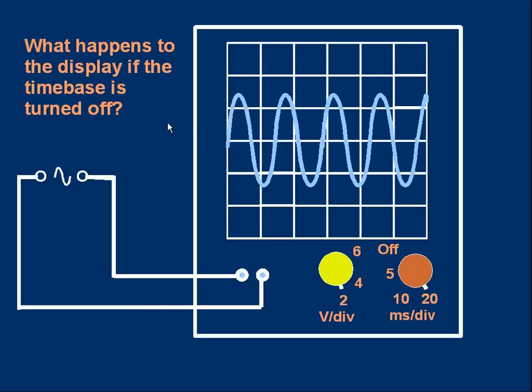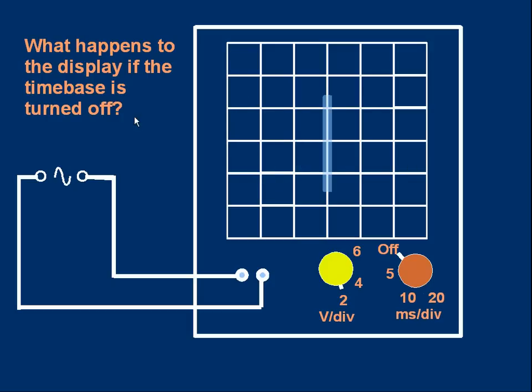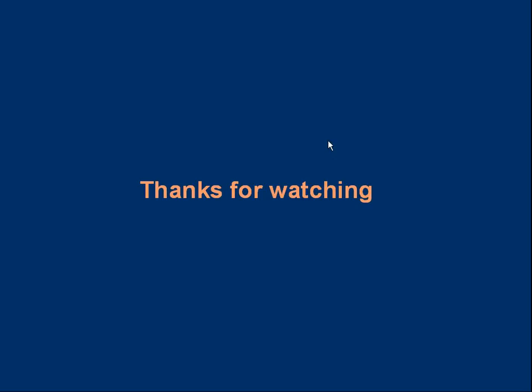And a final question for you. What happens to the display if you actually turn the time base to off? Pause and think. And we would just see a vertical line. The alternating voltage would be making the spot move up and down rapidly. But because the time base is off, the spot is not being moved left to right. It's just remaining in the central left-right position. We see a continuous vertical line. Quite a good way to measure the peak voltage, actually, by measuring the height of the line. Okay, thanks for watching.